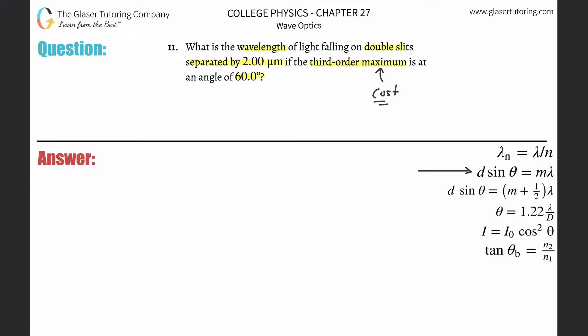The second one from the top there. This tells us that the distance between the slits multiplied by the sine of the angle between the slits and this third order maximum will be equal to the order m multiplied by the wavelength.